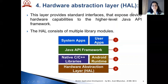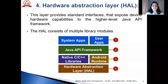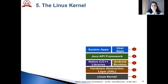The next layer in the stack is the Hardware Abstraction Layer. This layer provides standard interfaces that expose the device's hardware capabilities to the higher level Java API framework. The Android application uses HAL APIs, that is Hardware Abstraction Layer APIs, to get service from hardware devices. The HAL consists of multiple library modules, each of which implements an interface for a specific type of hardware component, such as a camera or Bluetooth module. When an API framework makes a call to access device hardware, the Android system loads the library module for that particular hardware component, making it available for the rest of the layers to access.